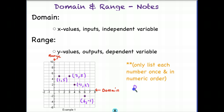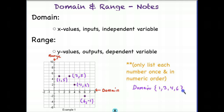So if we were going to list our domain, a key thing to keep in mind is that you only list each number once, even if you have two of the same numbers, and you list them in numerical order. So looking at all my x values: I have a 1, a 3, a 4, and a 6. I would write 1, 3, 4, and 6. Notice those are all in numerical order, and I've only listed each number once. If I did have two 1s, I would list one only once. If I had two 3s, or three 3s, I would list only one 3.